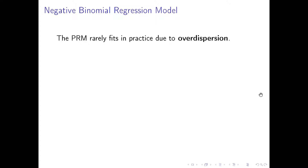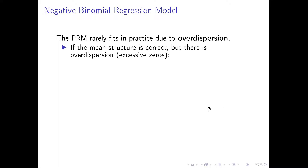Let me get into the negative binomial regression model, a commonly used count regression model in practice — more so than the Poisson regression model. The Poisson regression model rarely fits in practice due to what is called over-dispersion, and that's the reason why the Poisson regression model, often abbreviated PRM, is quite often used as the baseline model to begin with. If the mean structure is correct but there is over-dispersion, a lot of times caused by excessive zeros for the count response variable.